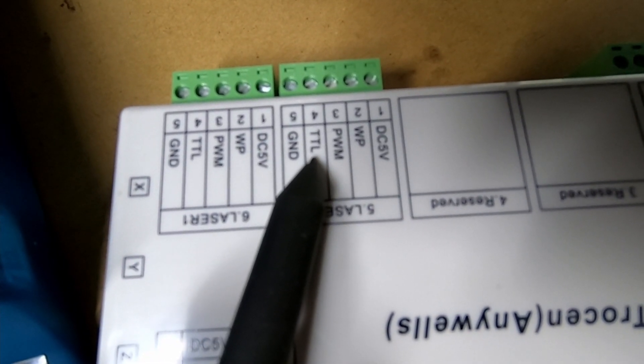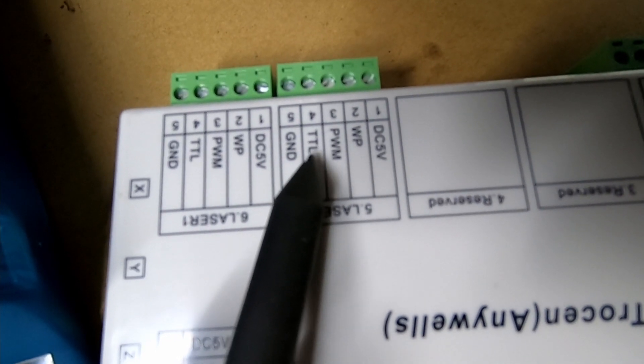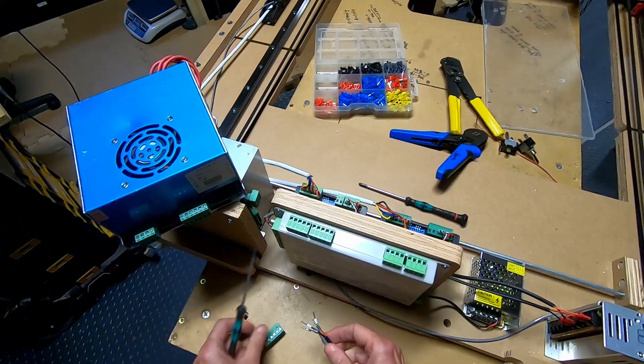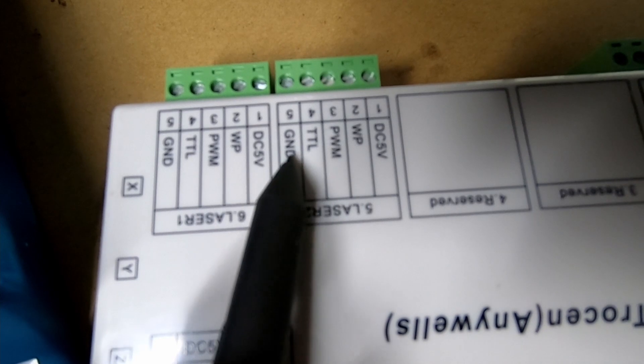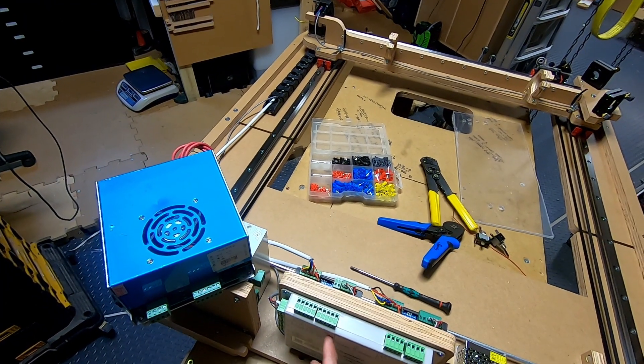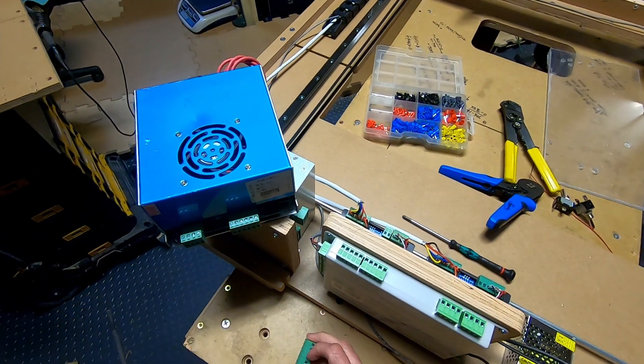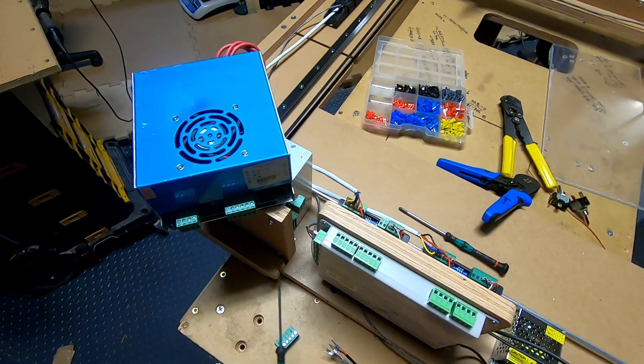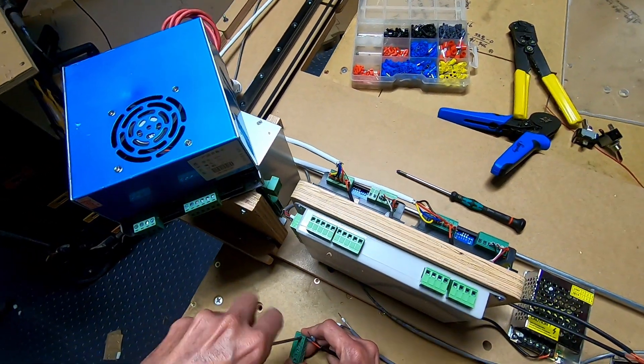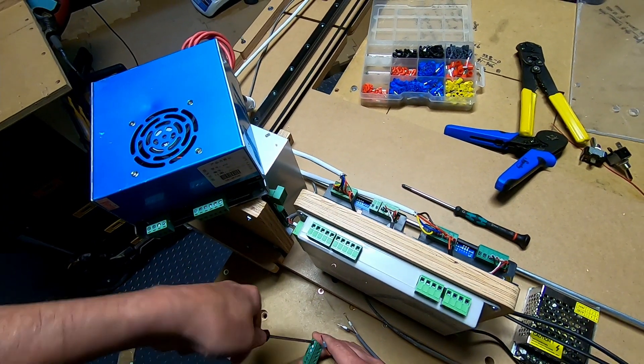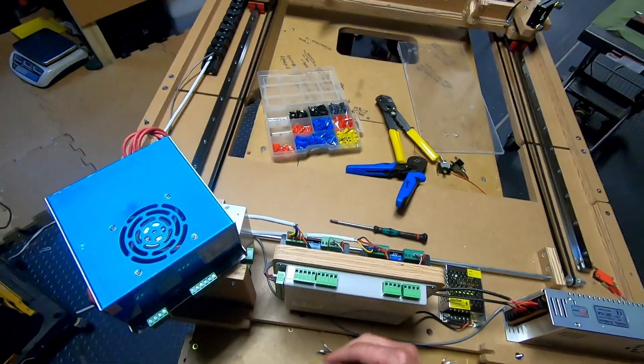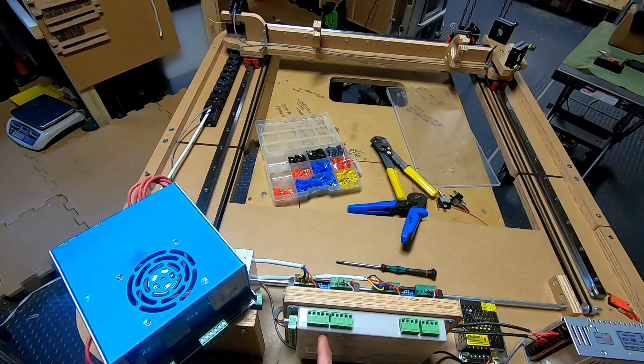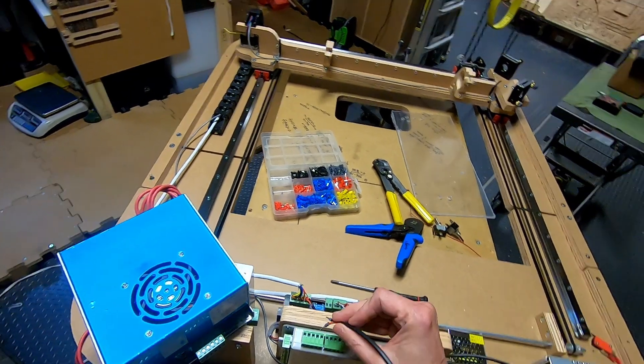So the first one was 5 volts. I'm going to go ahead and use the red. I'm using two cables since there's five connections that we need. There's six on here, but remember the high and low is only one of them is going to be used. So the 5 volts is going to be the first one, and we're going to connect the 5 volt here on this particular terminal.